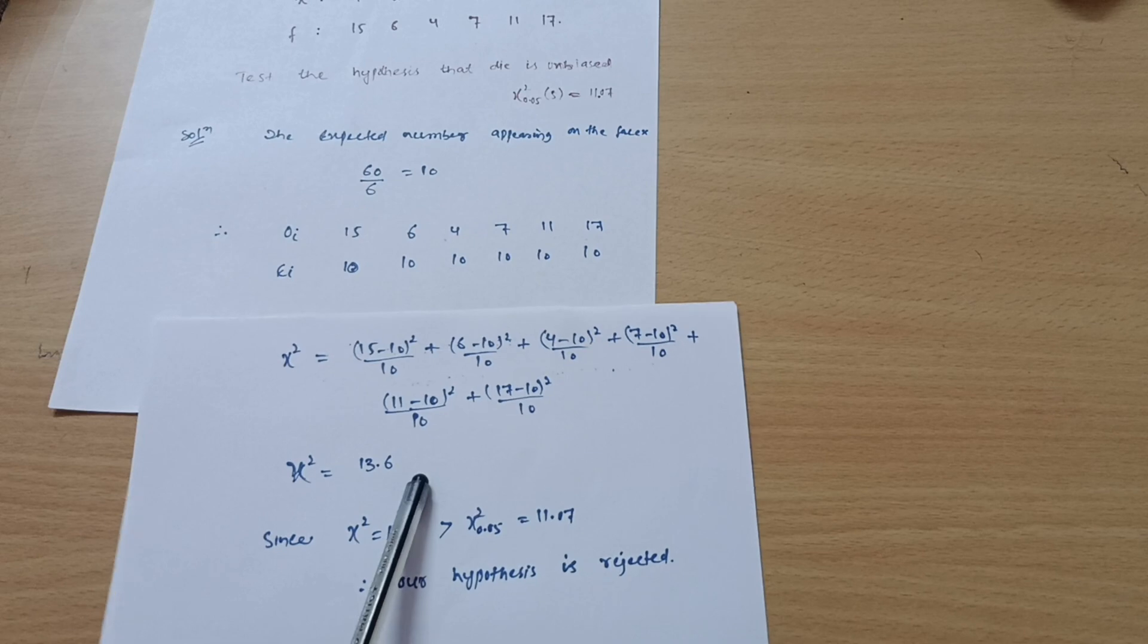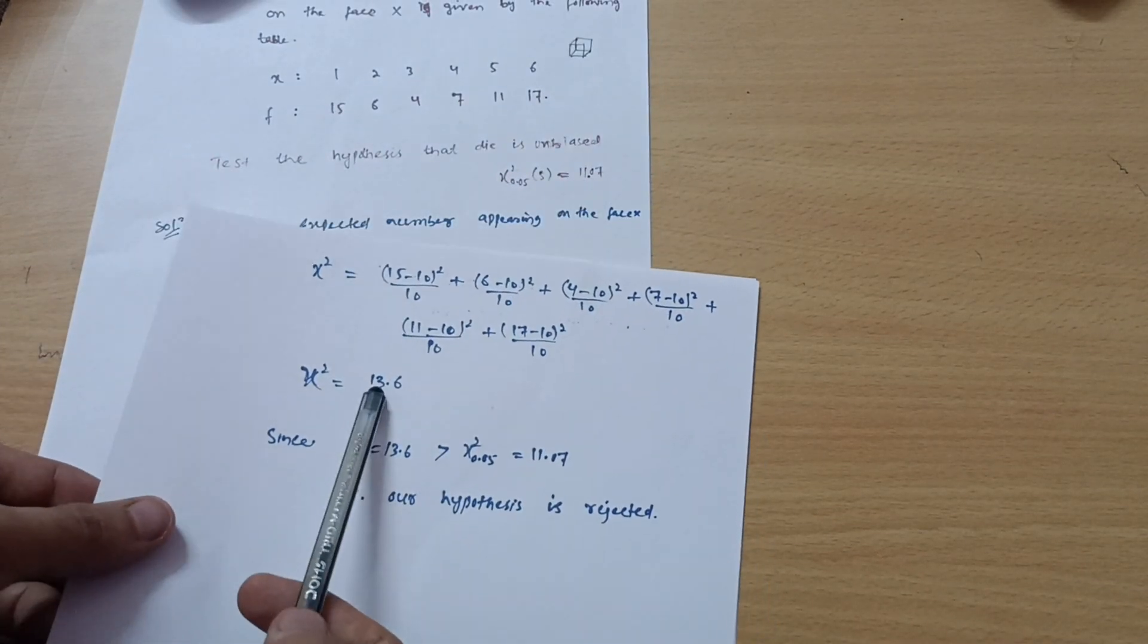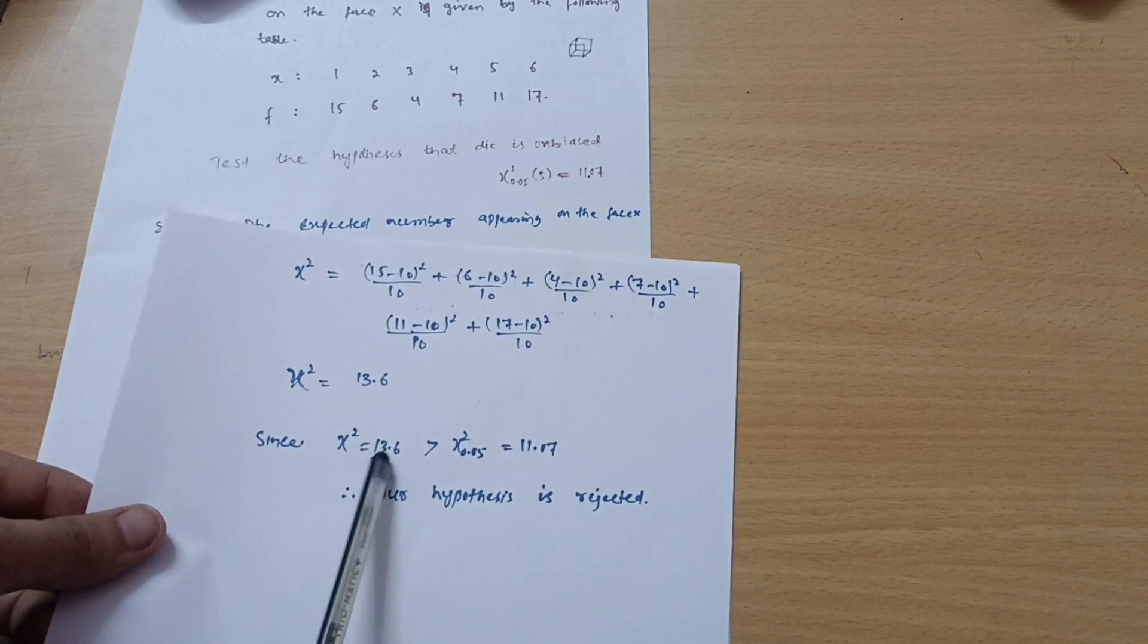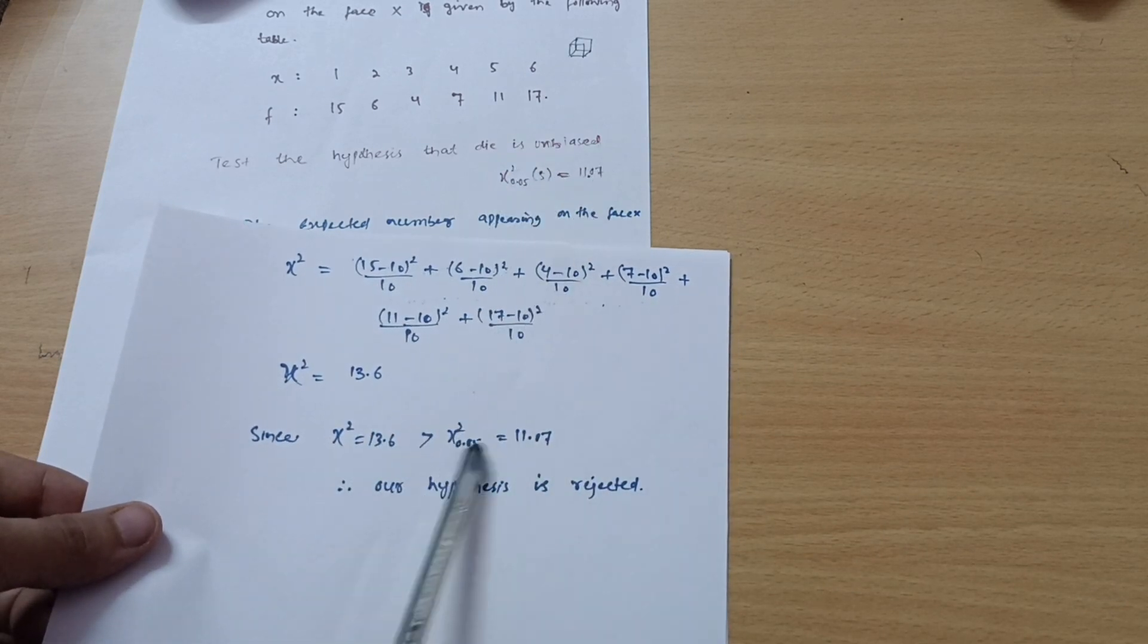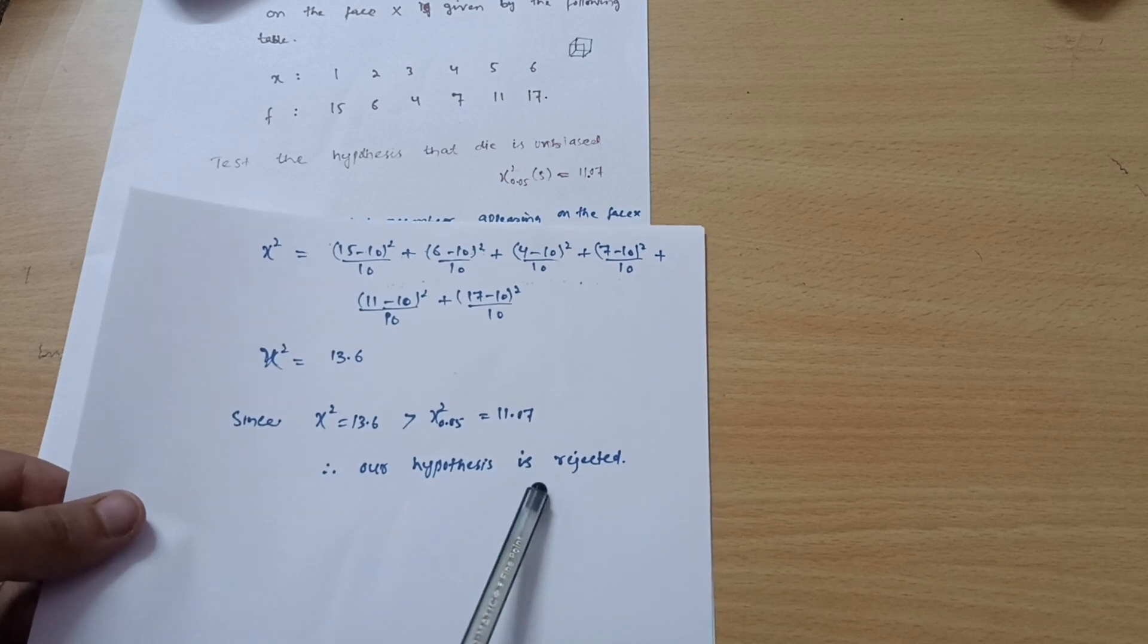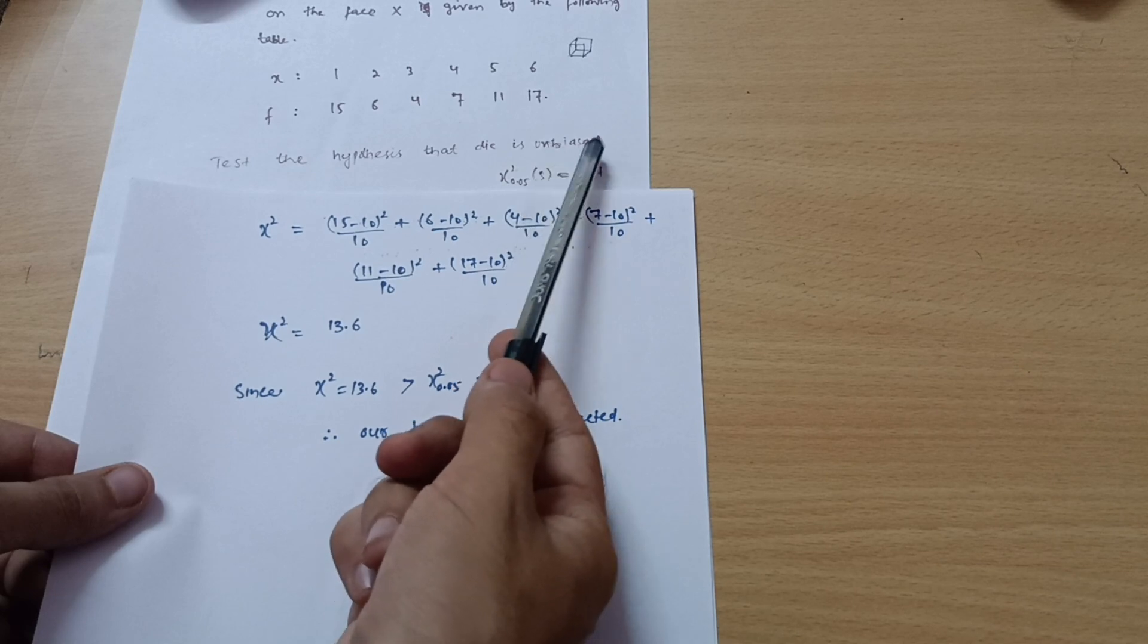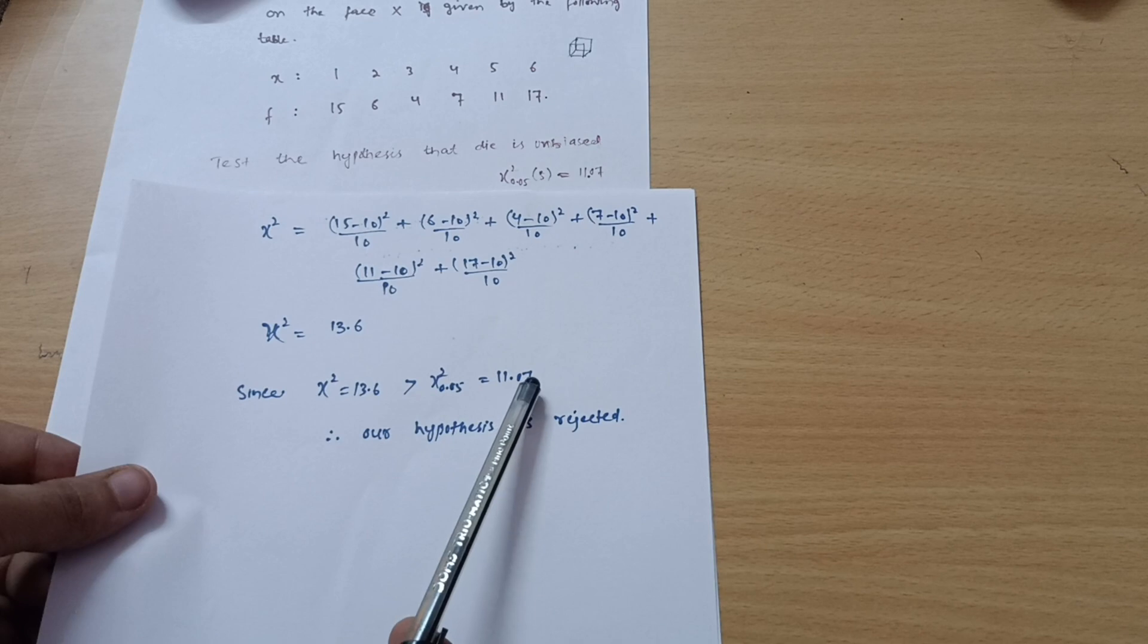As I earlier told you, if we are getting chi-square more than the given value, given value is 11.07 but here we are getting more than 11. In that particular case you can write down in your conclusion: since chi-square is equal to 13.6, it is greater than the given value that is chi-square at 5% level of significance is 11.07. It is definitely more than 11.07. In this case our hypothesis will be rejected, or in other terms you can write down the die is not unbiased in this case.